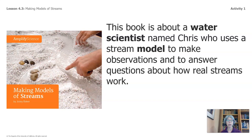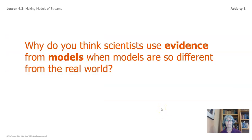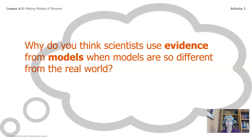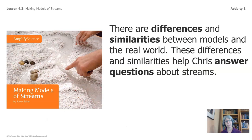How do you think scientists use evidence from models? Who uses a stream model to make observations and to answer questions about how real streams work. Why do you think scientists use evidence from models when models are so different from the real world? Be thinking about that. We will revisit this question in the next lesson, and we will also be reading about Chris and how he uses models of streams in his work. There are differences and similarities between models and the real world. These differences and similarities help Chris, the water scientist, answer questions about streams.